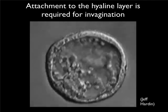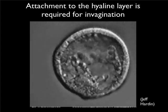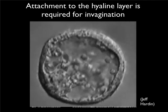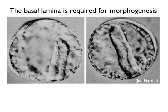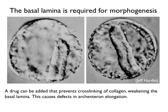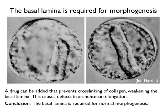We've seen that primary mesenchyme cells develop an affinity for the basal lamina, and it turns out secondary mesenchyme cells also need to attach to it. We can perturb the interior extracellular matrix — the basal lamina — using a chemical called beta-aminopropionitrile, which prevents cross-linking of collagen, a component of the basal lamina. This weakens the basal lamina and therefore causes problems for mesenchyme cells that need to interact with it, causing problems with migration and with archenteron elongation. When you perturb the basal lamina, you get a kinked archenteron, or secondary mesenchyme cells can't attach and archenteron elongation fails. The conclusion is that the basal lamina is also required for normal morphogenesis of a sea urchin gastrula.